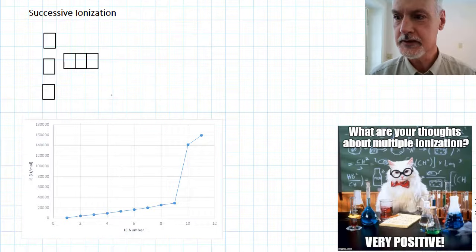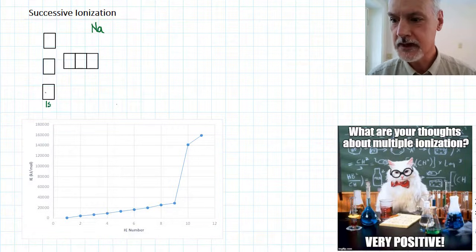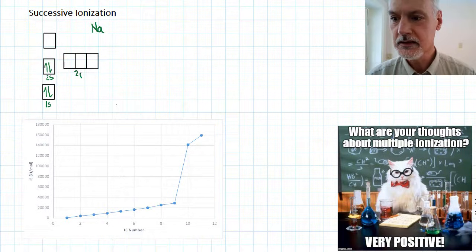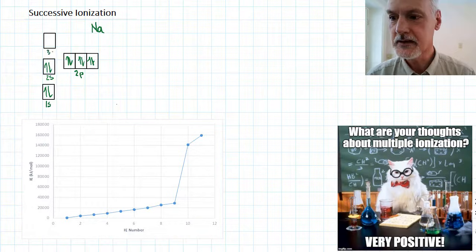Let's consider the element sodium, Na, with its 11 electrons. In the 1s orbital we'd have two electrons with opposite spin, indicated by our arrows. In the 2s we'd have two more. In the 2p six electrons. And finally in the 3s one electron.